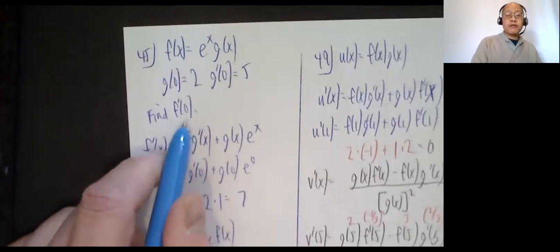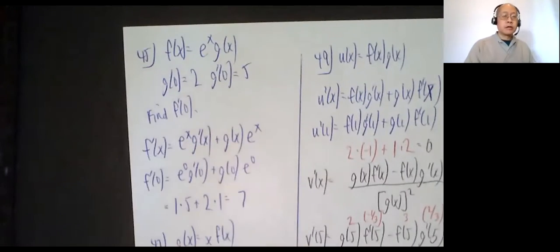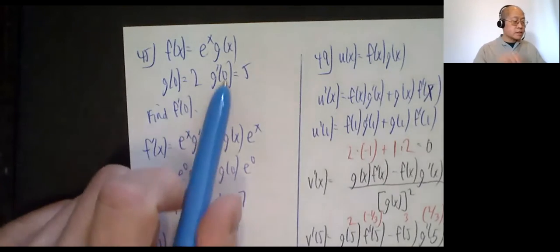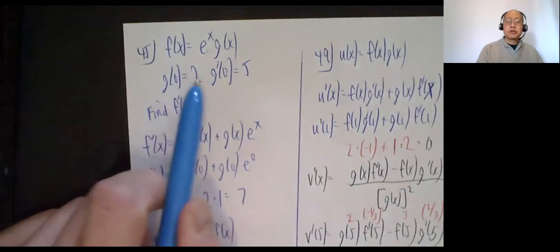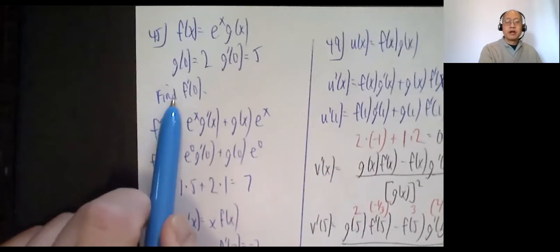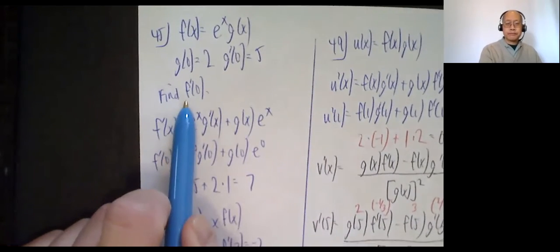Then some leftover problems from section 3.2. Problem 45: you're given f of x is e to the x times some unknown g of x. They tell you g of 0 is 2, g prime of 0 is 5. Find f prime of 0.